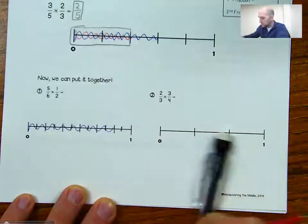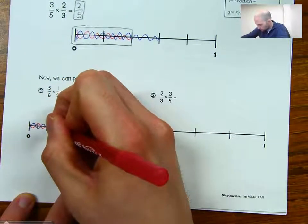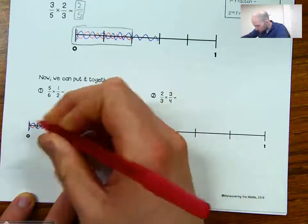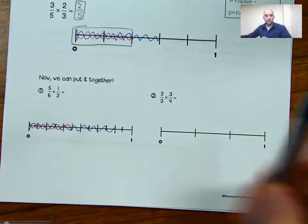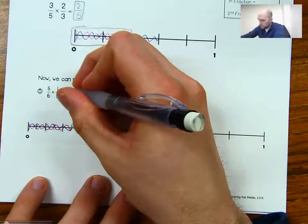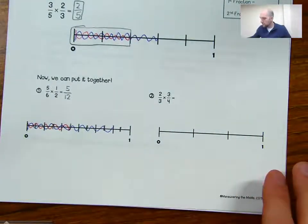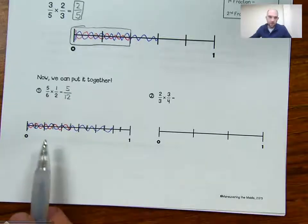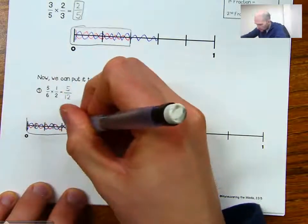I'll use my red pen to come to five-twelfths here — one, two, three, four, five. We end up with five-twelfths. We can see we have twelve pieces and five of them are shaded with both blue and red, right up to where the red stops.